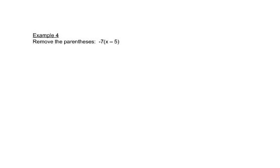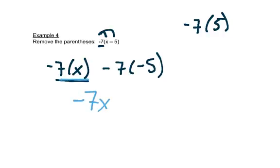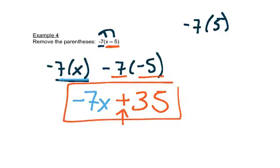Here we have a negative 7 in front of the parentheses, which means multiplication — the negative 7 is multiplied by everything inside the parentheses. So we take negative 7 times x, which we write as negative 7x, and then negative 7 times negative 5. Negative times negative is positive, so we write plus 35. We need a sign between them to separate the two terms: plus if positive, minus if negative.